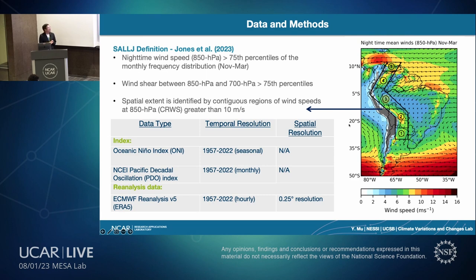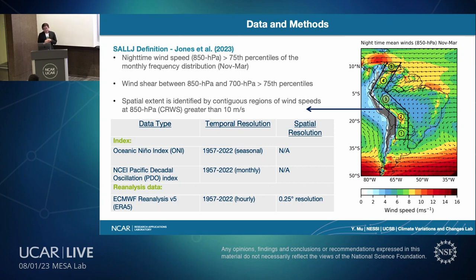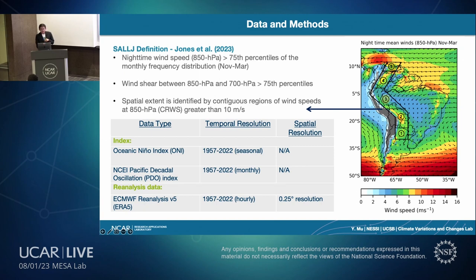How do we define and identify SALLJ? We employed a new definition we developed recently, expanding a low-level jet index using ERA5 from 1957 to 2022, focusing on austral summer (November to March) when they are most frequent. We define a low-level jet in South America when the nighttime wind speed at 850 mb and wind shear between 850 and 700 mb exceed the corresponding 75th percentiles of the monthly frequency distribution. We then quantify the spatial extent using five contiguous regions with wind speeds exceeding 10 m/s at 850 mb.